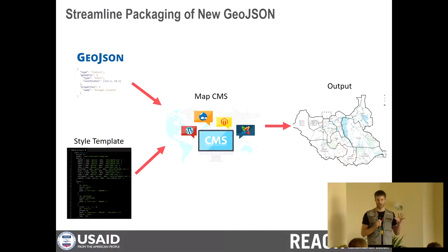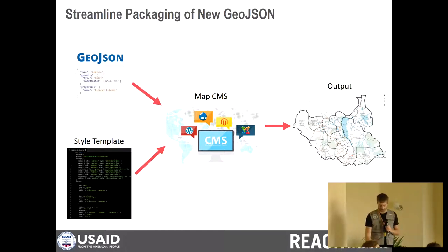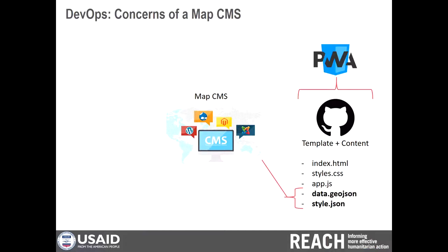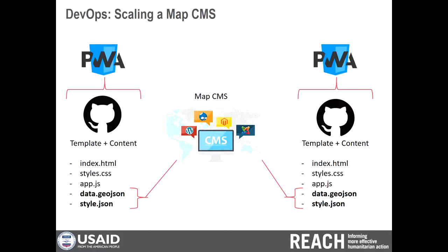What you really want to do is separate the template from the data, and use something like a map CMS — treat your data and styling like you would treat a blog. The CMS is going to have a very specific concern: it only deals with data and styling. And if you can create one CMS to control one map, it can also do two, or 20, or 200 — it can scale fairly well to control a whole bunch of different static sites.